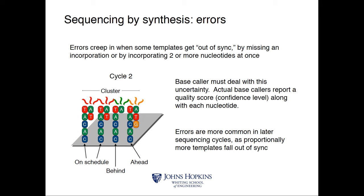The reason I'm going through this chemistry is to understand why the error rate rises toward the three prime end — because molecules get progressively more out of sync as cycles proceed. I'll try to find and share the exact chemical structure of the reversible chain-terminating group in Slack if anyone's interested.